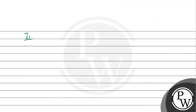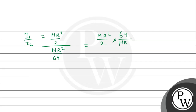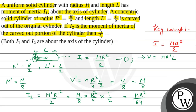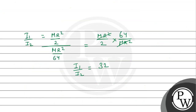So we find i1 divided by i2: i1 = mr²/2, divided by i2 = mr²/64. This gives us (mr²/2) divided by (mr²/64). The mr² terms cancel out, and 64 divided by 2 gives us 32. So i1 divided by i2 is equal to 32. The moment of inertia of the carved-out portion gives i1/i2 = 32. Hope you understood it well. Best of luck.